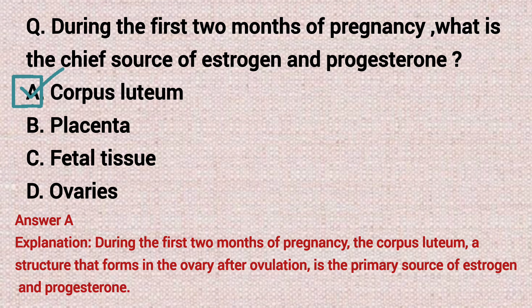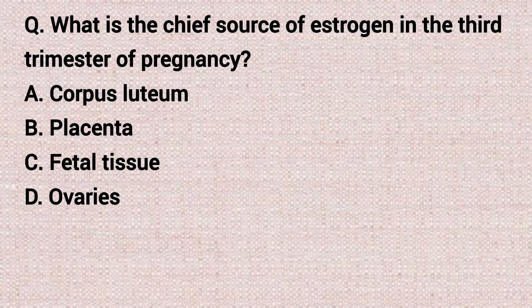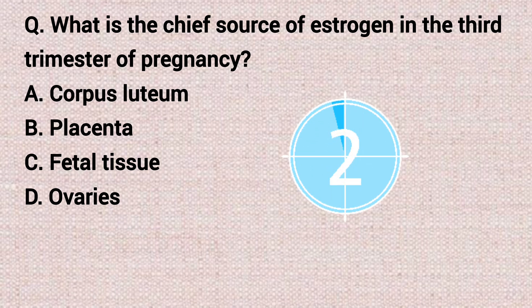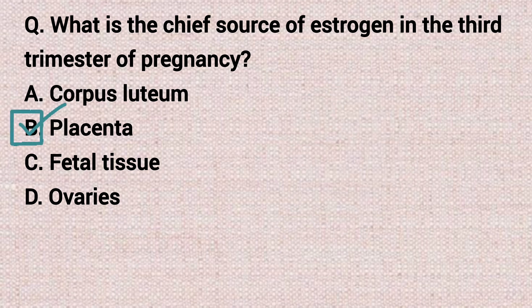The next question: what is the chief source of estrogen in the third trimester of pregnancy? Option A: corpus luteum. Option B: placenta. Option C: fetal tissue. Option D: ovaries. The correct answer is option B, placenta.